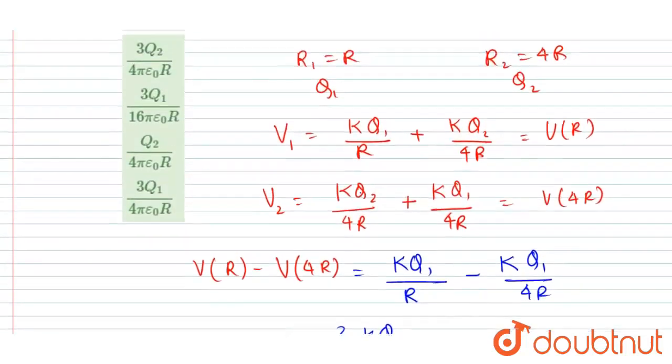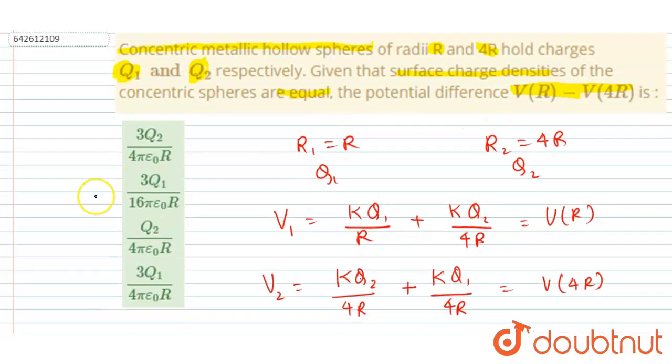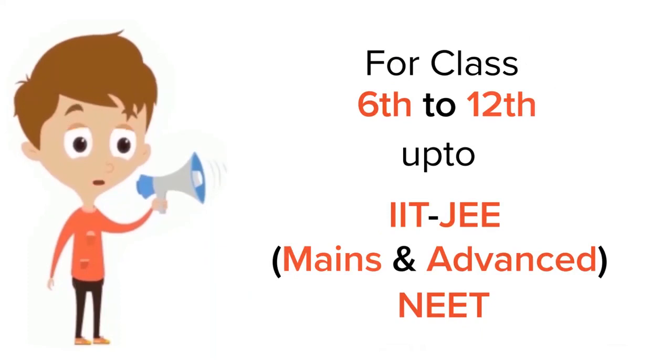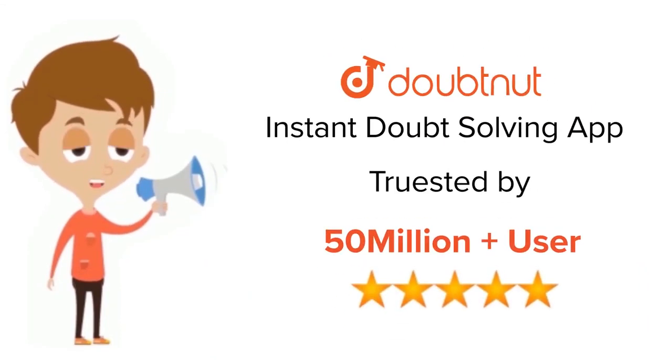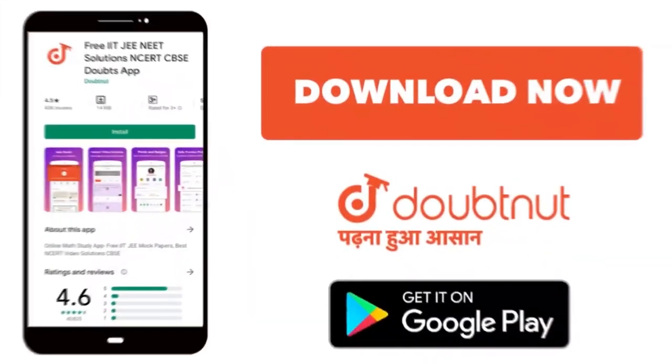Now you could check the correct option. So if you see, B is the correct option. Thank you. For class 6 to 12, IIT-JEE and NEET level, trusted by more than 5 crore students, download Doubtnut app today.